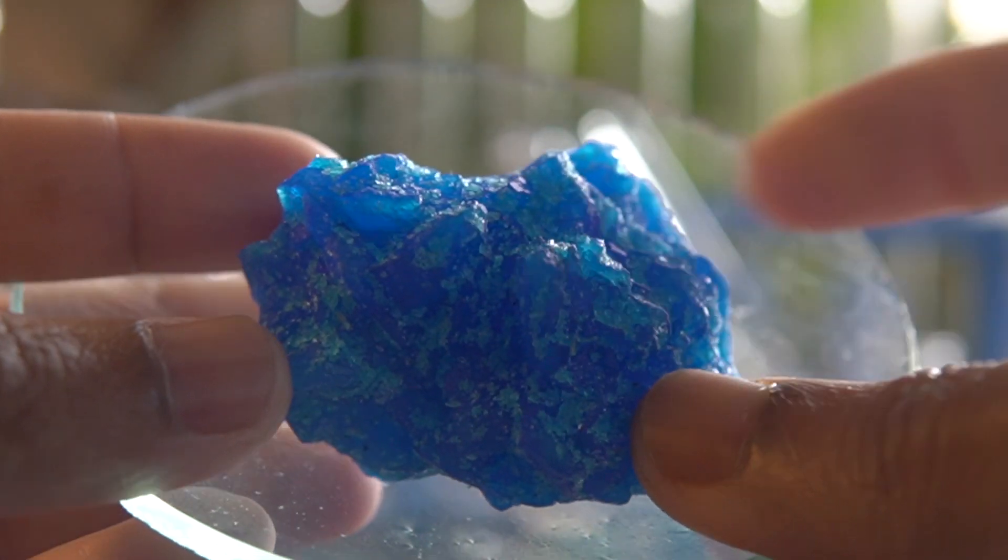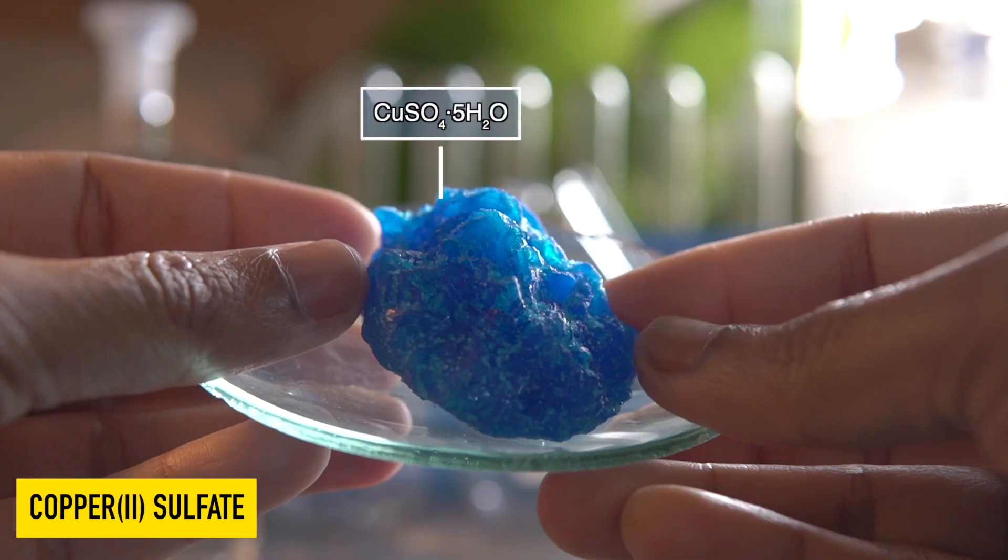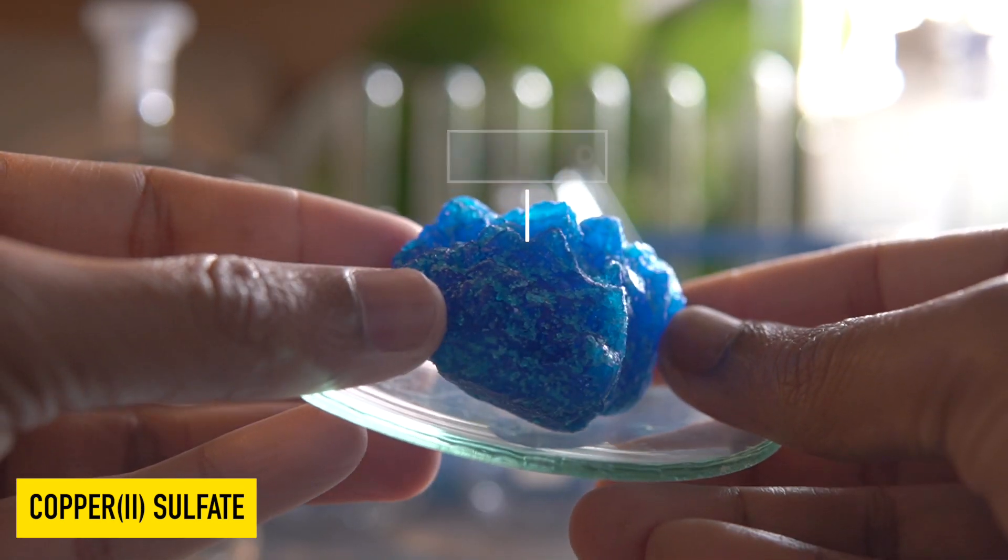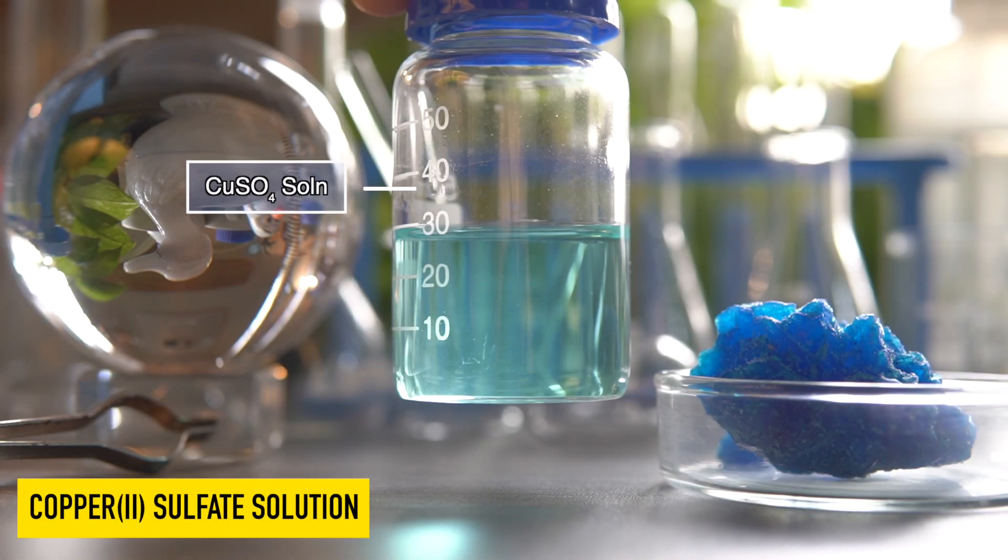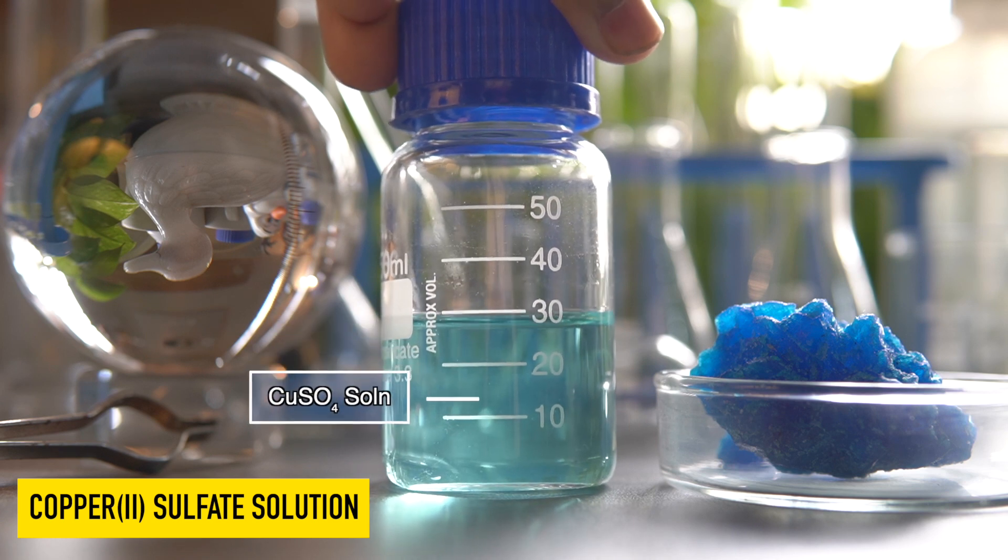This is copper sulfate, it is blue in color due to the presence of 5 molecules of water in it. It is commonly called blue vitriol. It is highly soluble in water and can easily dissolve in water to make a solution.